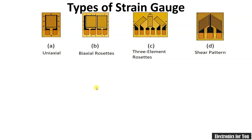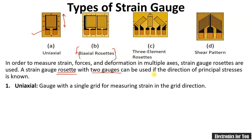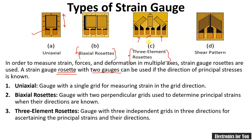Now let's see the types of strain gauge. We have already seen the uniaxial strain gauge, which has two terminals and is used for measurement of strain in only one direction. If two or more directions are to be measured, two or more sensors should be used — these are known as rosettes. For biaxial rosettes we can measure two different directions; similarly, three-element rosettes are used for three directions. In this way, different types of strain gauges are used for the measurement of strain in different directions.